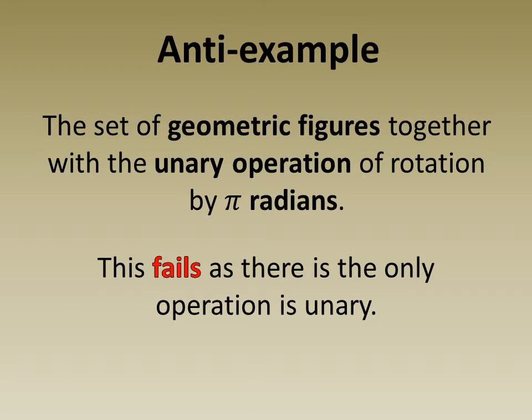As an anti-example we have a set of geometric figures together with the unary operation of rotation by π radians. This fails to be an algebraic structure as the only operation is unary.